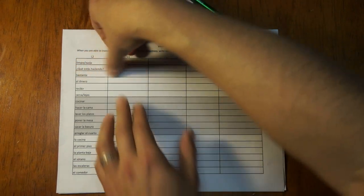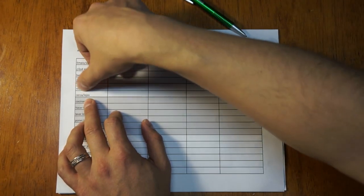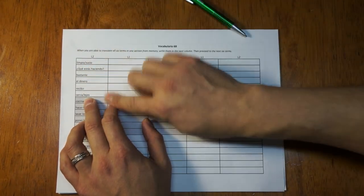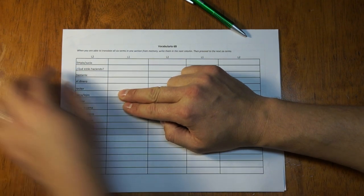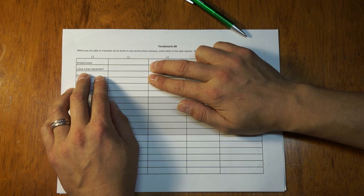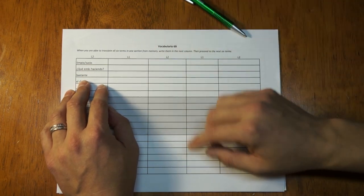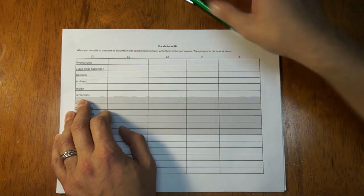We'll continue. El dinero is money. Recibir is to receive. Cerca and lejos is not tall and short as I thought before. It's actually near and far. But I've only gotten three words in a row. So let me go back to the top. Limpio, sucio is clean and dirty. ¿Qué estás haciendo? Is what are you doing. Bastante is the one that I kept on forgetting. That's enough. And I've already gotten these three. So that's six terms in a row.